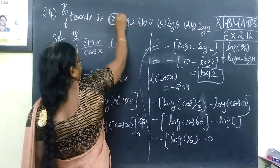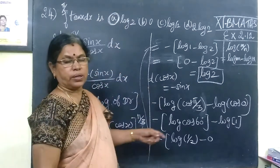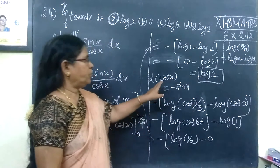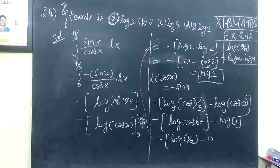The method was to put cos equal to t, then find the difference at the upper and lower limits. So the answer is log 2.